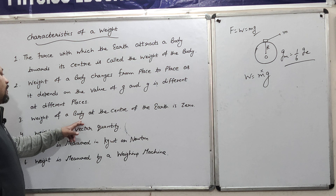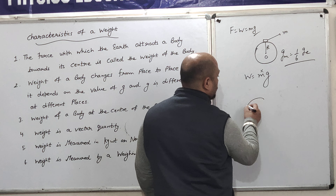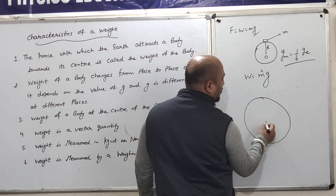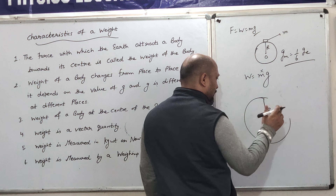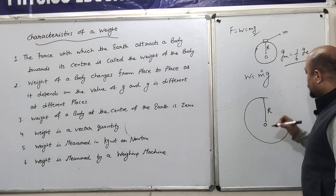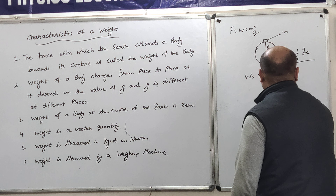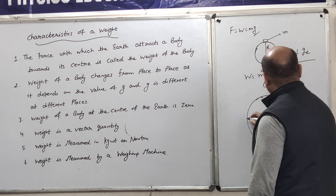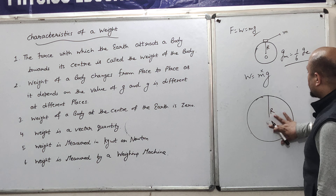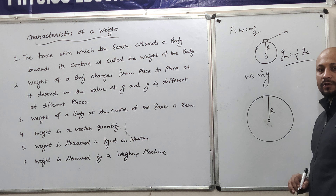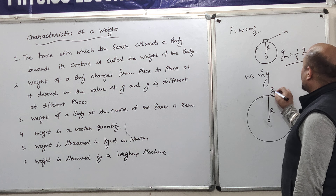Third property: the weight of a body at the center of the earth is zero. Consider this is the earth with center point O and radius R. The center point is O and the radius is R.